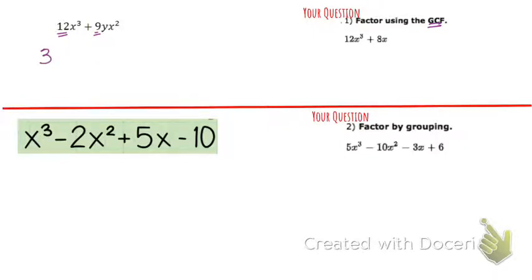And then I go to the next variable, x to the third, and here there's x to the second power. So what is the most number of x's that they both have? They both have at least one, but they both have at least two.